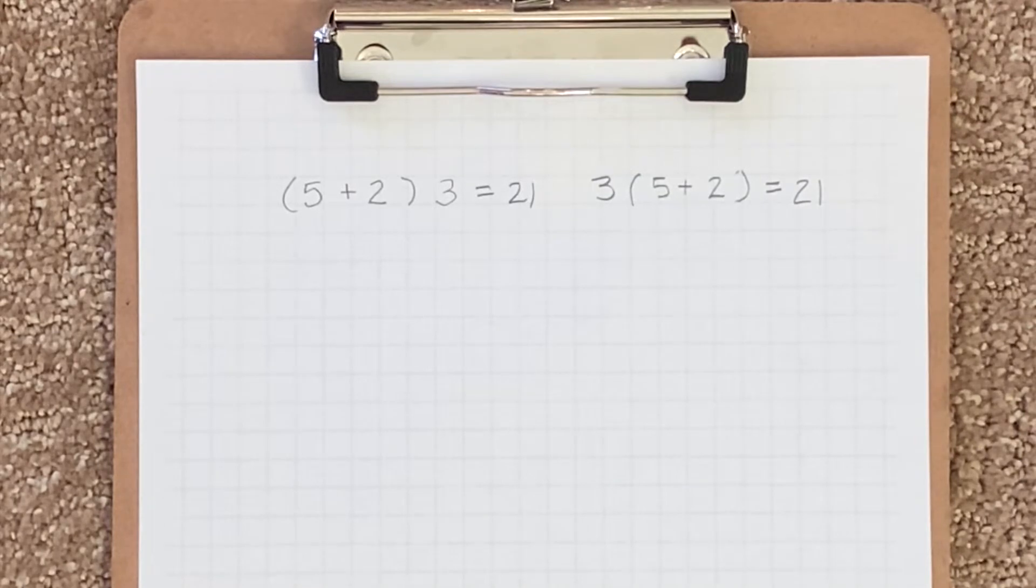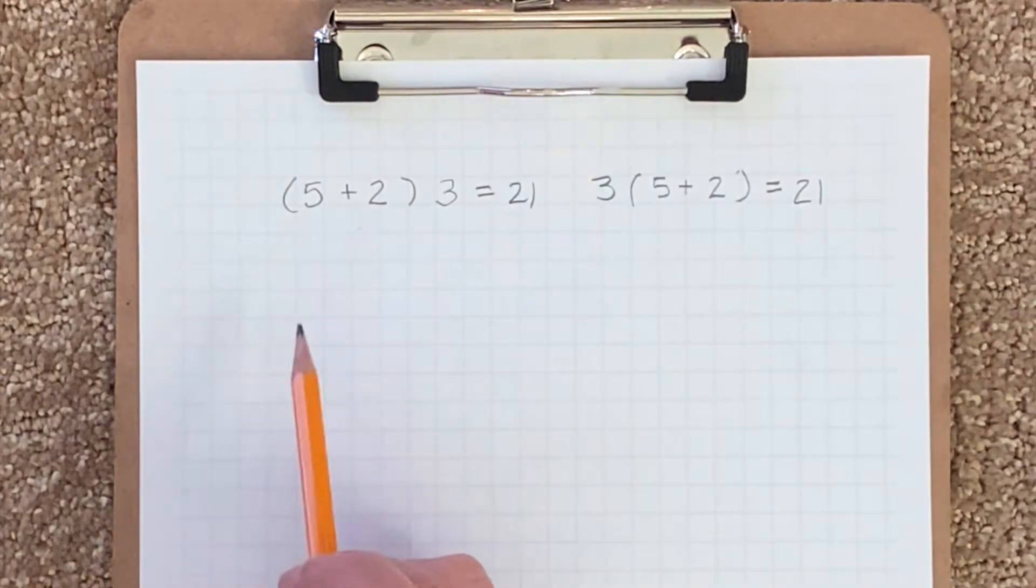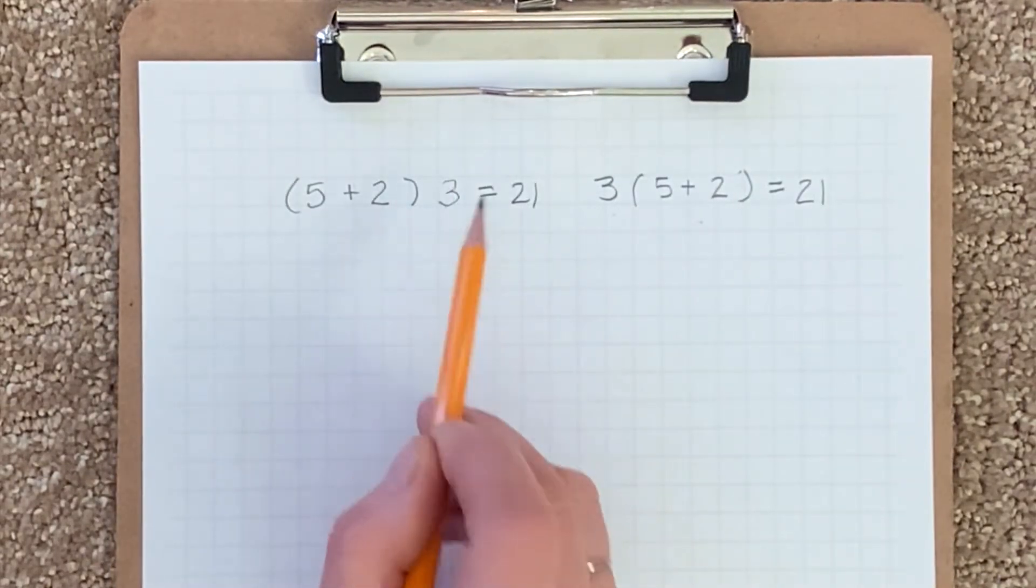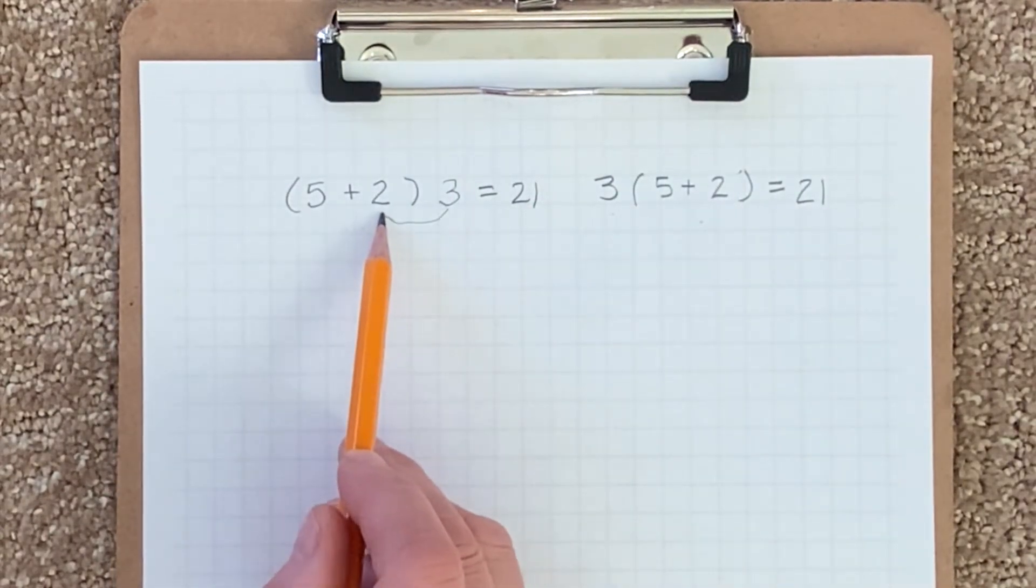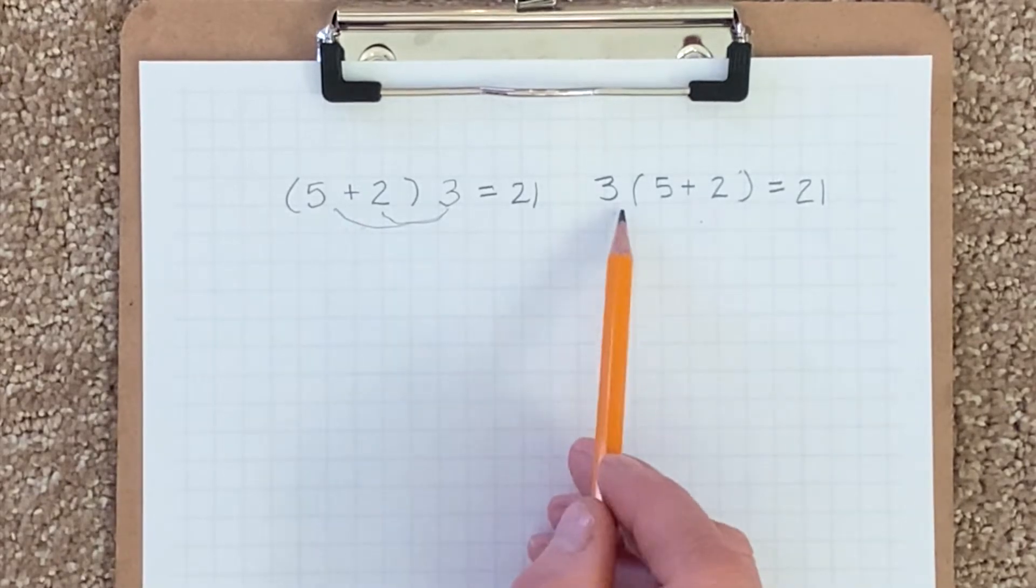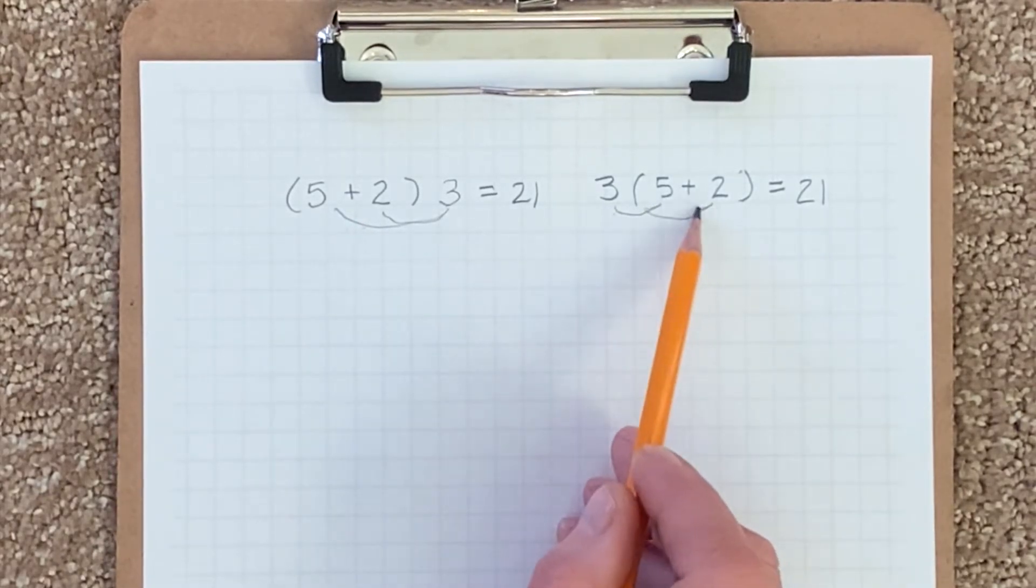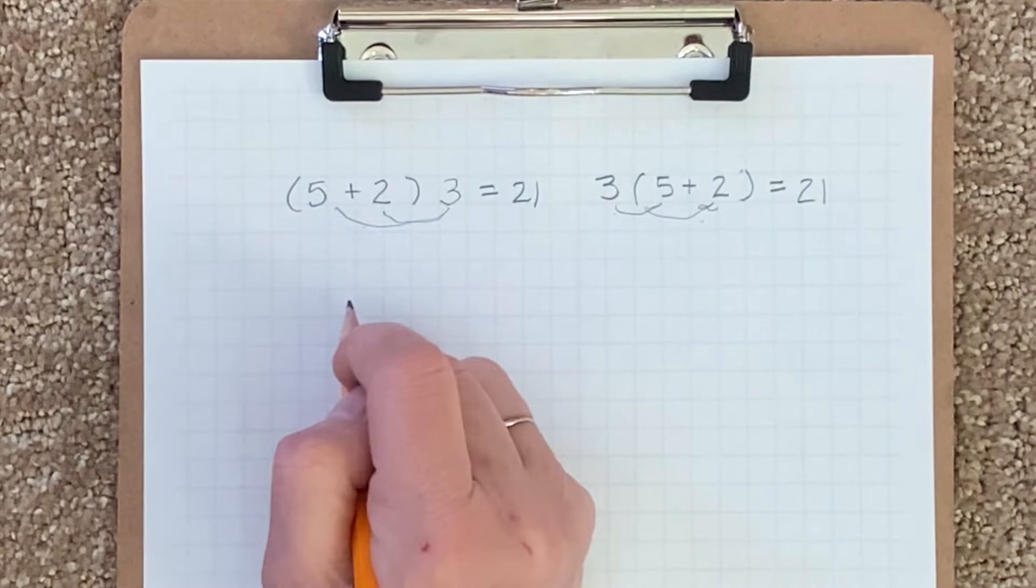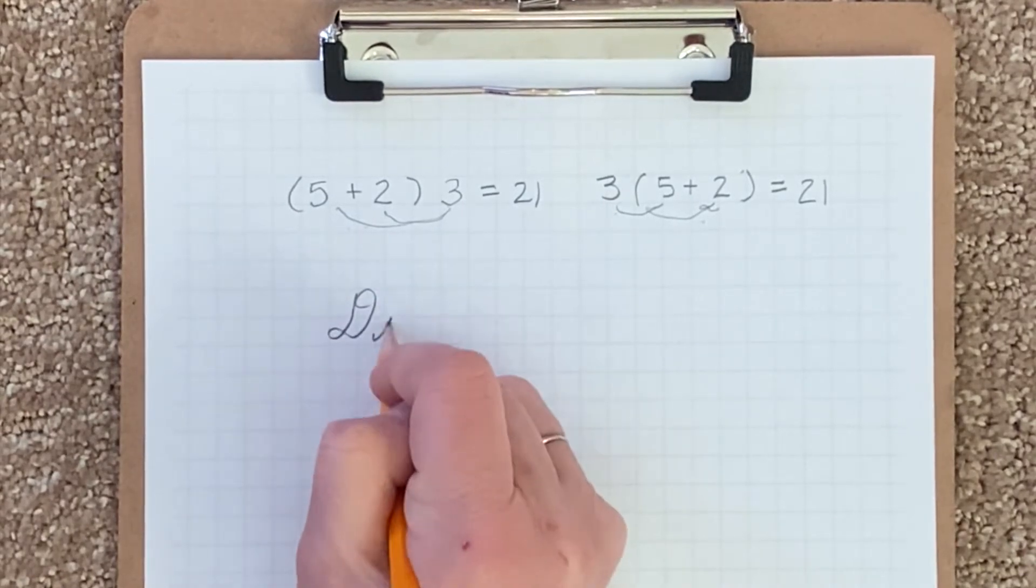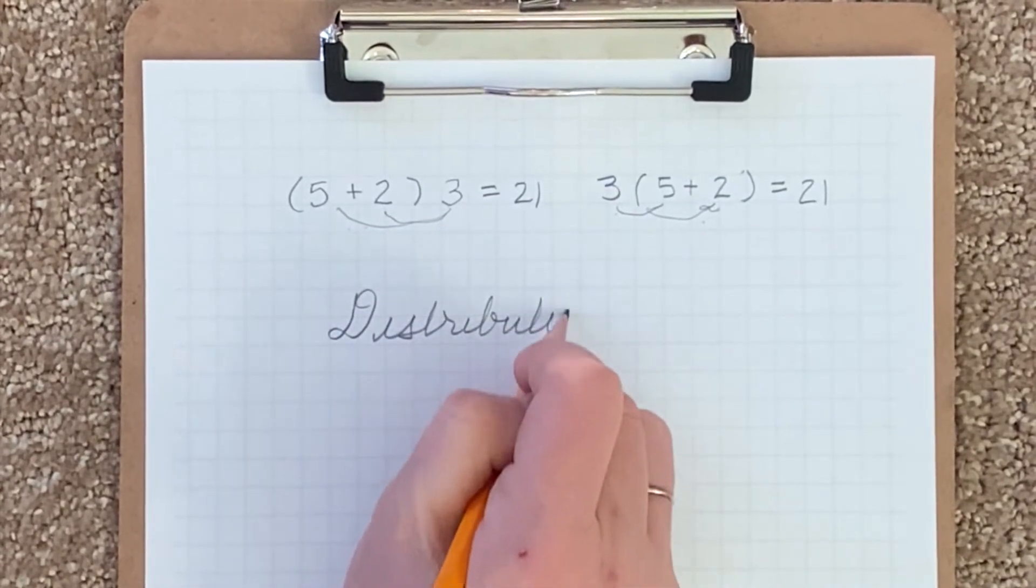So what we learned from this is when a multiplicand or a multiplier is made up of two terms, we can say each term must be multiplied by the other number. So another way to say that is this other number is distributed over the terms.